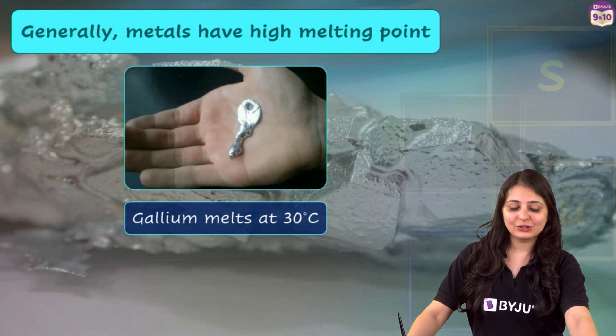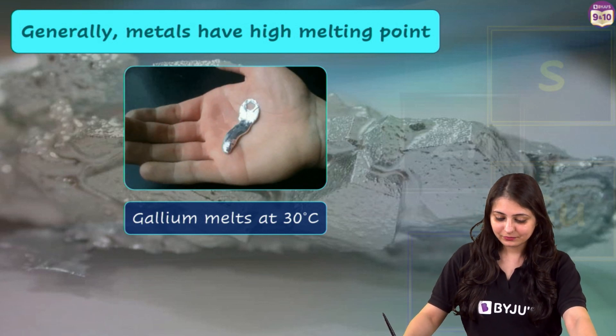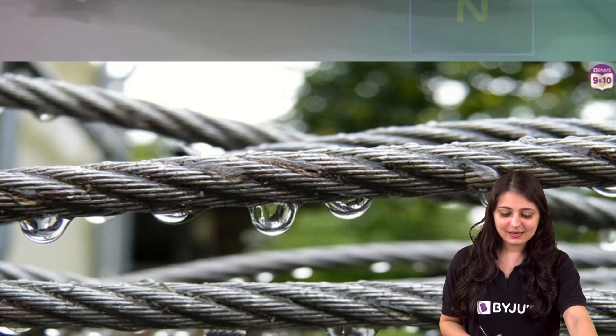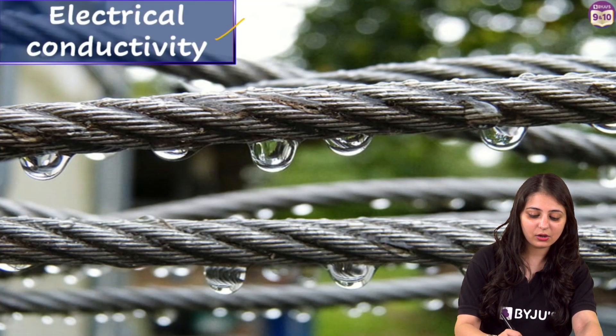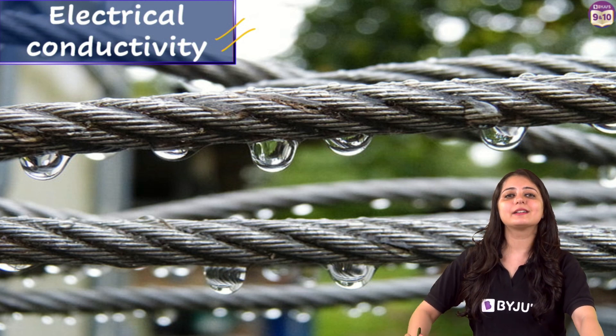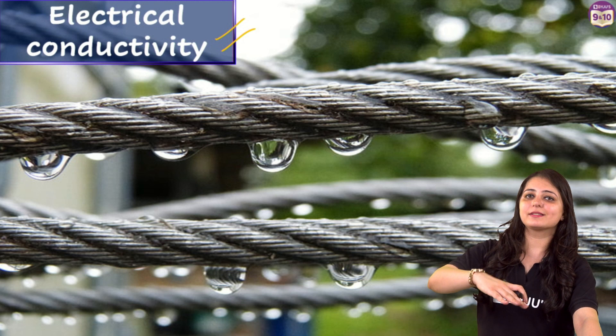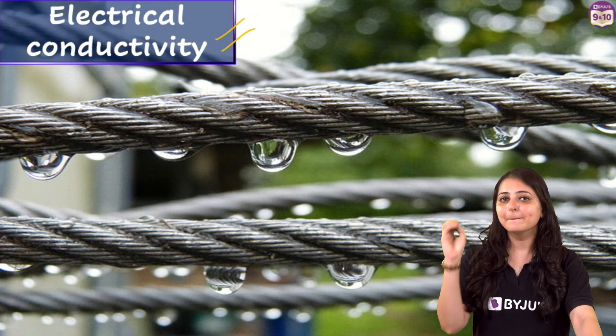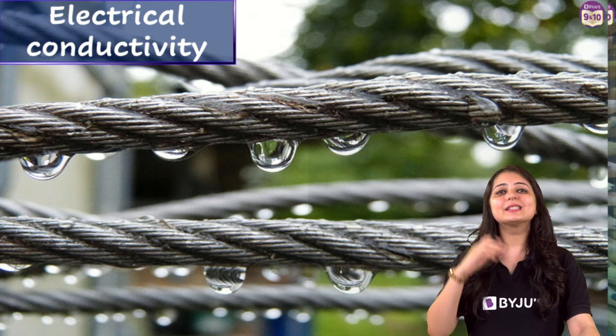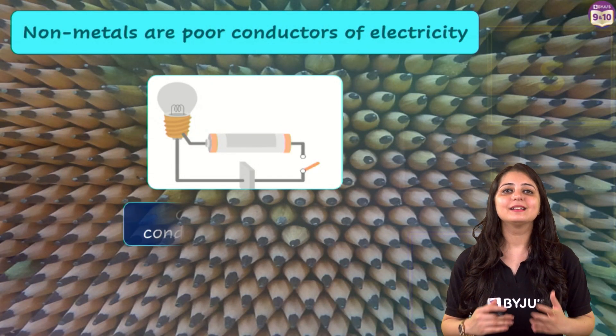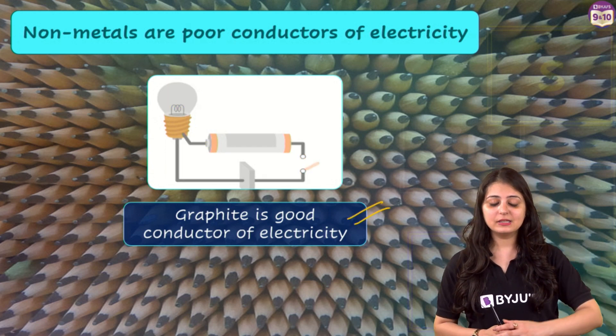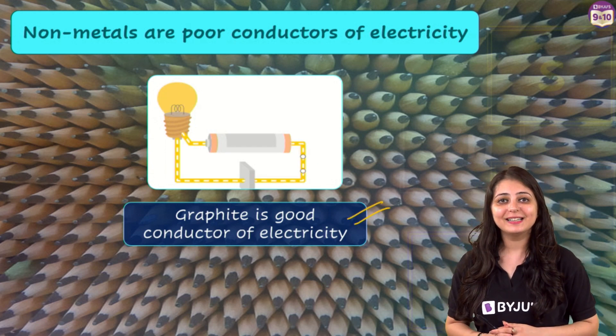Let's move on to the next one now. Finally, the fifth one is electrical conductivity. So let's talk about this one. Metals are generally good conductors of electricity and non-metals are poor conductors. But graphite, an allotrope of carbon, is the only non-metal that conducts electric current. So you need to know about this exception. This is very often asked in exams.